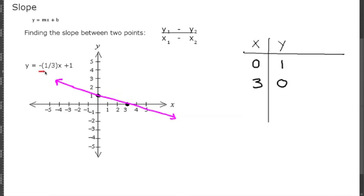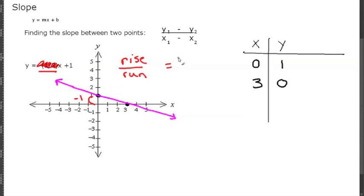Now let's find the slope just by looking at the two points on the graph. The rise — the change in Y — from the first point to the second is going down 1, so that's negative 1. The run in the x direction is 1, 2, 3 over to the right — a positive 3. So the slope is negative 1/3.